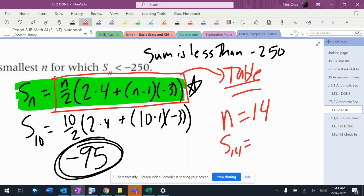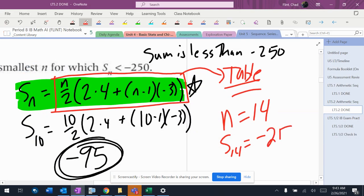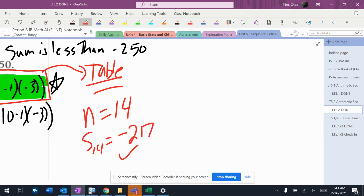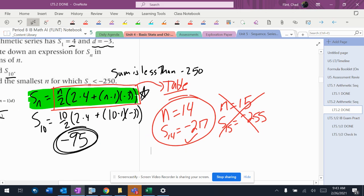So the trick here is what are you going to write down? I want to write down n equals 14, S_14 equals negative 217. So that shows that 14 is okay. But then n equals 15, S_15 equals negative 255, and that's not okay. So that's how I would write the answer to that question, and that's good enough.